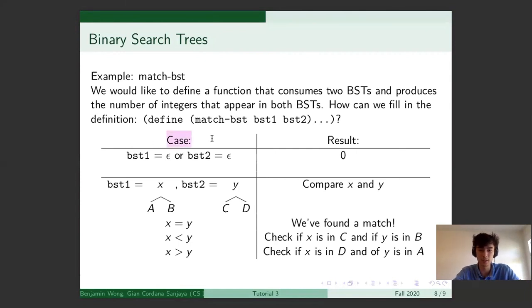So here are the cases and here are the results. If either BST is empty, BST1 is empty, or BST2 is empty, you produce zero because there's no elements there. In the case that they're both non-empty, we can write them out in this format with the key X and the key Y and the left and right subtrees AB, left and right subtrees CD.